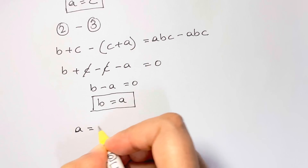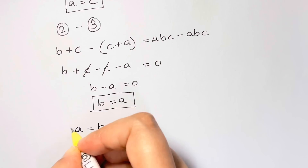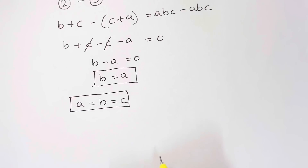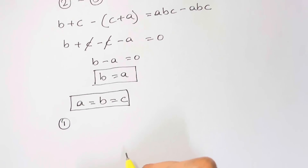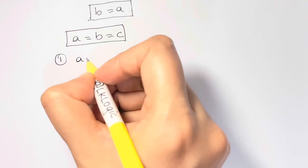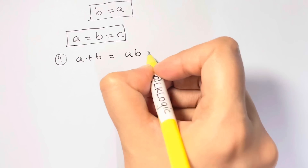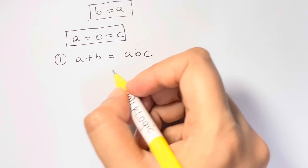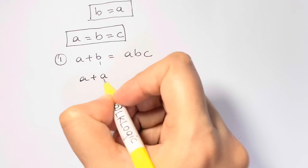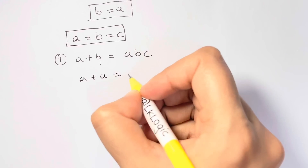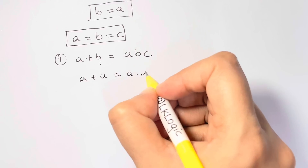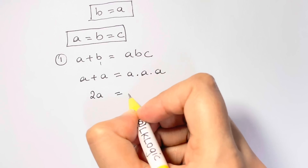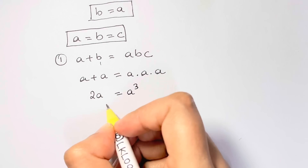So we can see that a is equal to b, and a is also equal to c. Hence a equals b equals c — all three values are the same. From equation one, a plus b equals abc. Substituting a for all variables: a plus a equals a times a times a, so 2a equals a cubed.